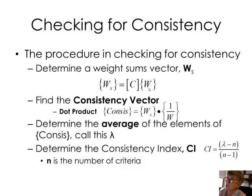And again, we had calculated this vector W, and C, the matrix C, was our six-by-six matrix that consisted of our pairwise comparisons. And now we're going to take that matrix C, multiply it by the weight vector to get this new vector called W sub S.